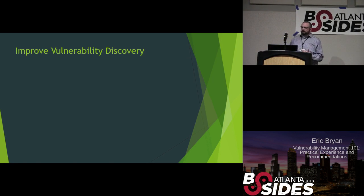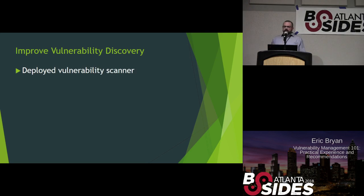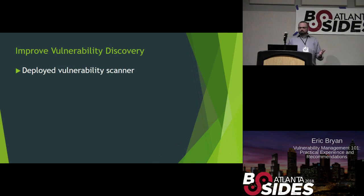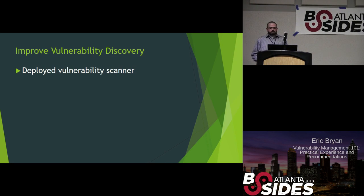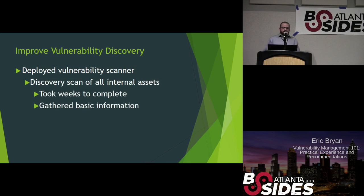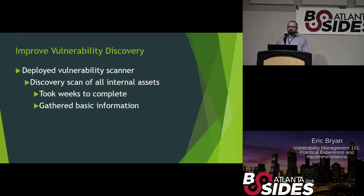The first goal when we started this program was to improve our vulnerability discovery. The first step was to deploy a vulnerability scanner — Rapid7 Nexpose is what we used. That helped us identify existing assets, vulnerabilities, and configuration issues. One of the first things we did after getting it fully implemented was run a discovery scan of all internal assets. The client operates a slash-8 network, so nearly 17 million IP addresses.